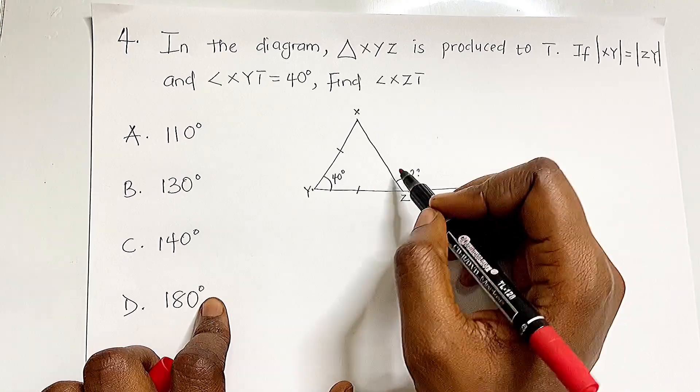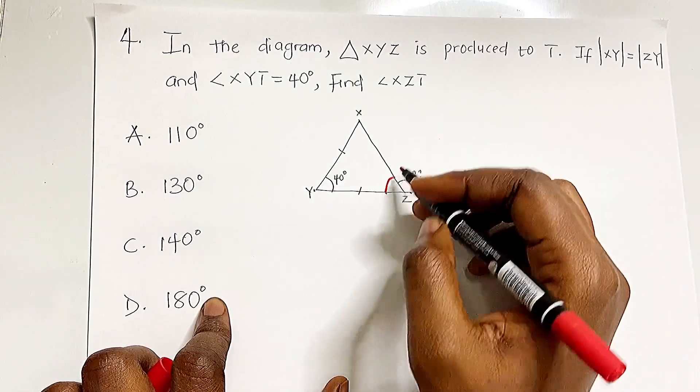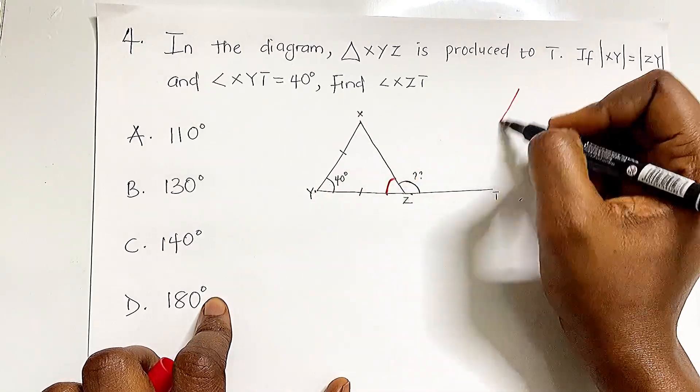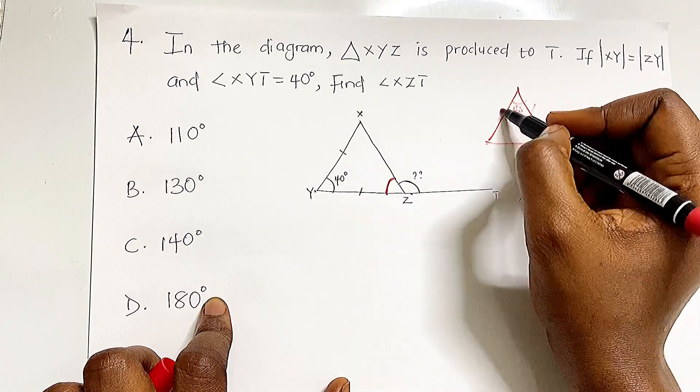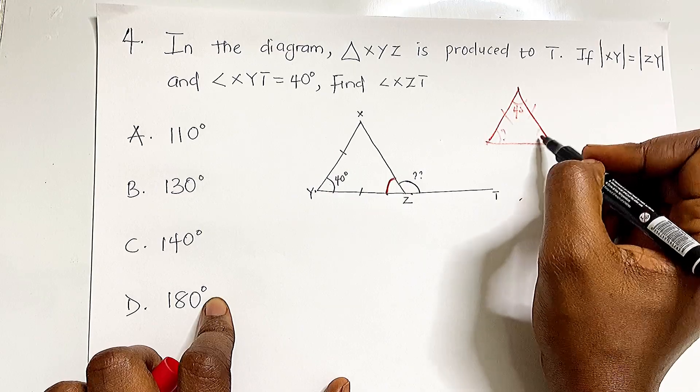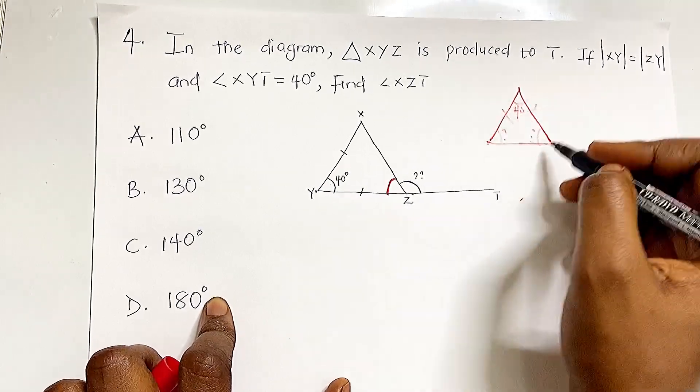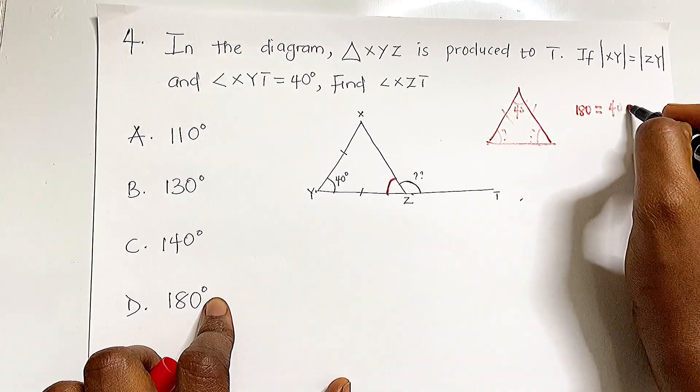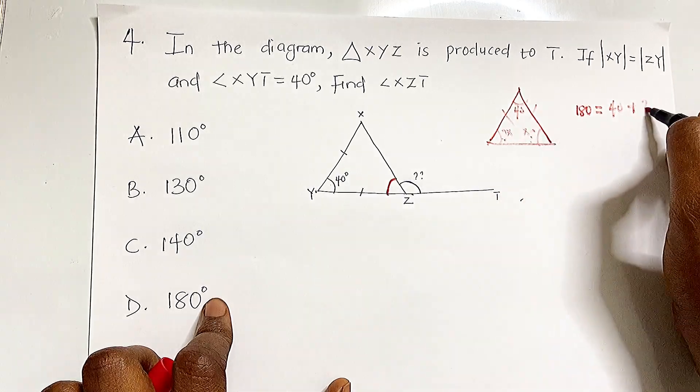This can be solved using angles on a line, which sum to 180 degrees. But first we need to find the interior angle. In an isosceles triangle with one angle of 40 degrees and two equal sides, the two base angles must be equal. The sum of angles in a triangle is 180, so 180 = 40 + 2X, where X represents each of the equal angles.